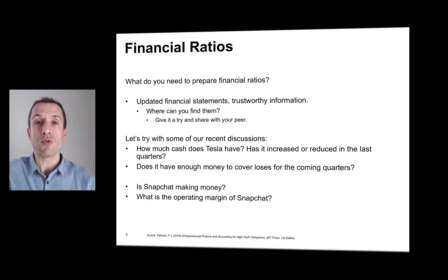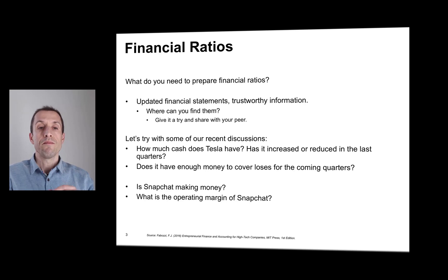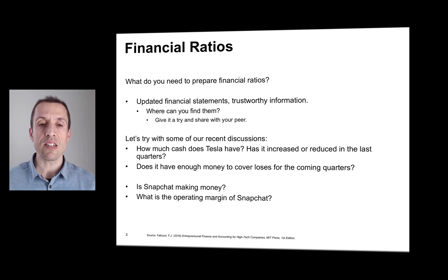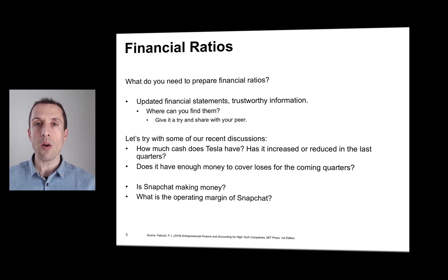Nowadays there are a lot of financial platforms or websites that aggregate that information for you, and you can also find simplified financial statements of many firms that are much easier to compare. Just be careful — try to check with more than one source, because sometimes the data in some of those financial platforms is not consistent with the official data of the company. For example, we will be able to analyze things like how much cash Tesla has, will they be able to survive the next quarters, or how many months of runway they still have. You can also look at startups like Snapchat and see whether they are actually making money and operating with a positive margin.